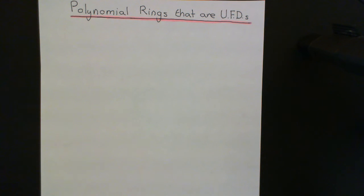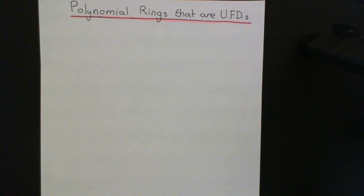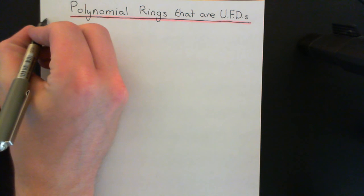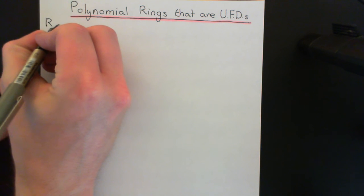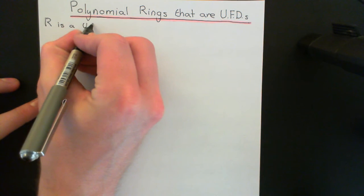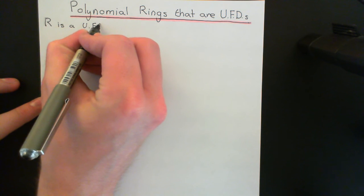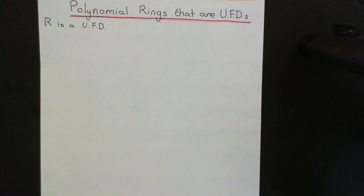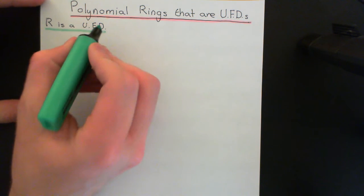Welcome to this next video in the playlist on ring theory. In this video, what we're going to talk about is polynomial rings that are unique factorization domains. The theorem we're going to prove is that if you start off with a unique factorization domain, capital R, and construct the ring of polynomials over this unique factorization domain, then that ring of polynomials is also going to be a unique factorization domain.